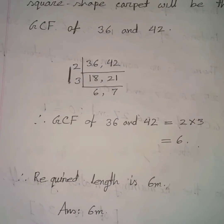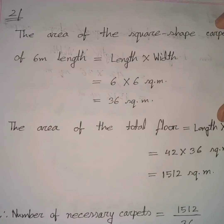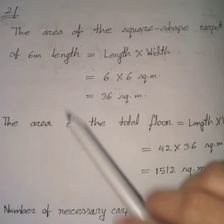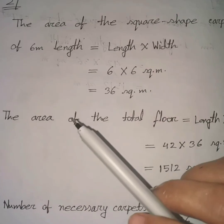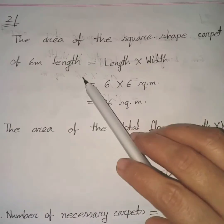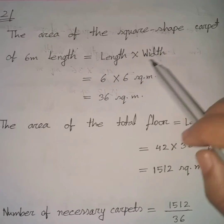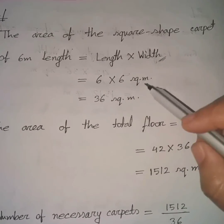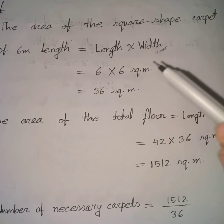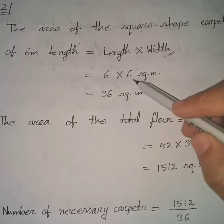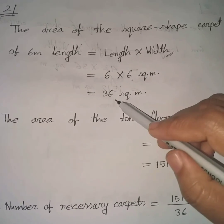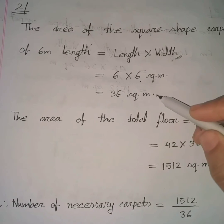For part 2, we find how many carpets are necessary. First, find the area of one square carpet: area = length × width = 6 × 6 = 36 square meters.